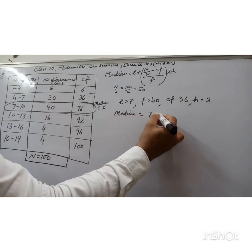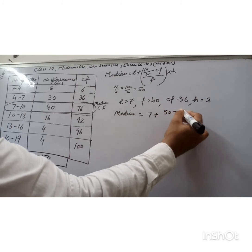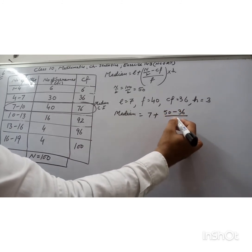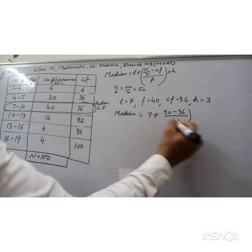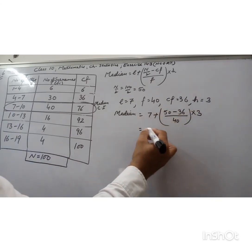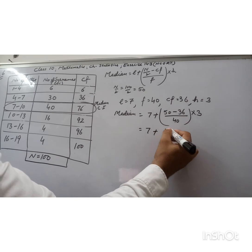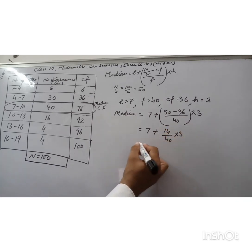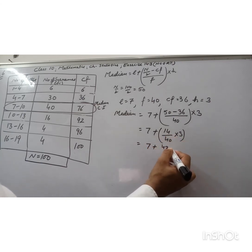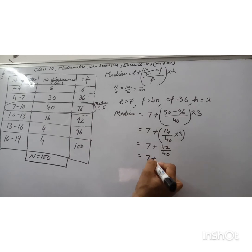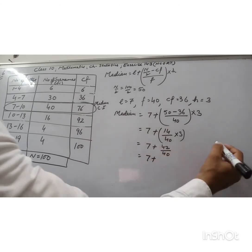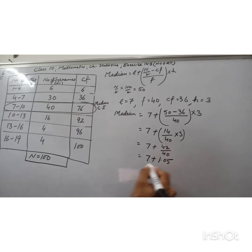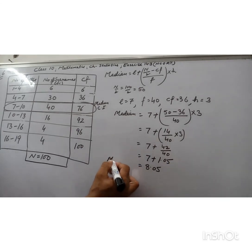Substituting the values: median = 7 + (50 − 36) / 40 × 3 = 7 + 14/40 × 3 = 7 + 42/40 = 7 + 1.05 = 8.05. So the median is 8.05. This is how we find the median for grouped frequency distribution.